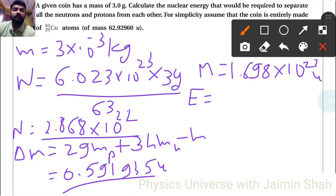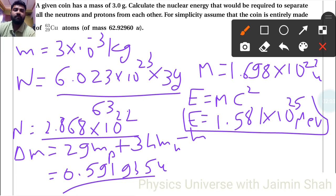Now we are going to multiply with m into c squared, so this into 931.5, right? So it will give us 1.581×10^25 mega electron volts. So that is energy, that is called binding energy here.